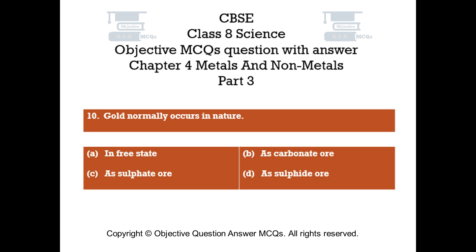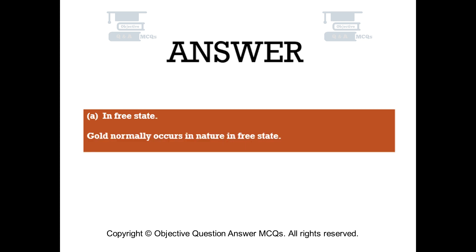Question number 10. Gold normally occurs in nature. Option A: in free state. Option B: as carbonate ore. Option C: as sulfate ore. Option D: as sulfide ore. The right answer is option A. In free state. Gold normally occurs in nature in free state.